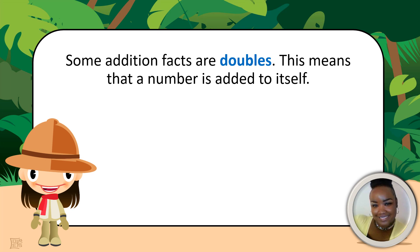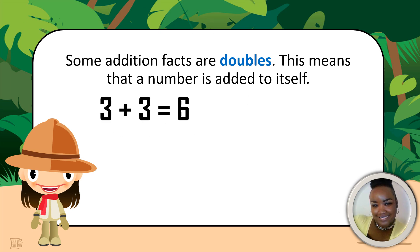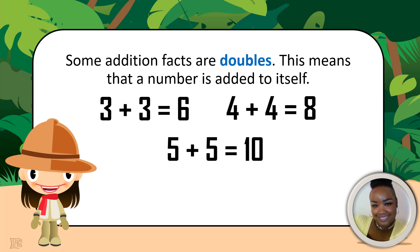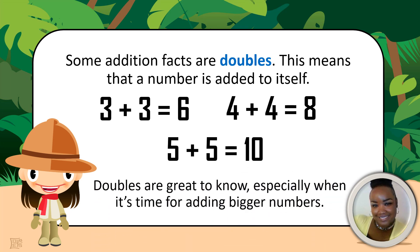3 plus 3 equals 6. 4 plus 4 equals 8. 5 plus 5 equals 10. Doubles are great to know, especially when it's time for adding bigger numbers. Here are some more examples.